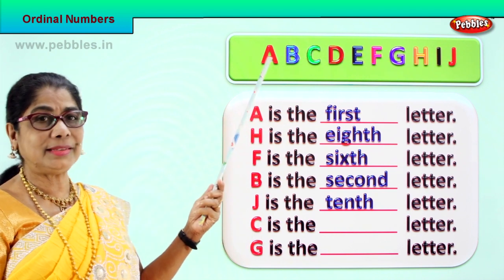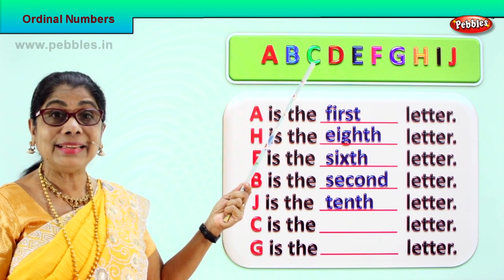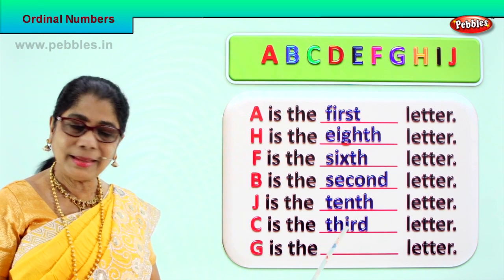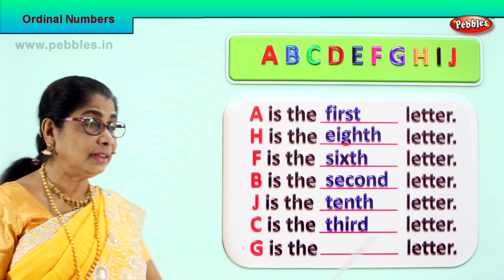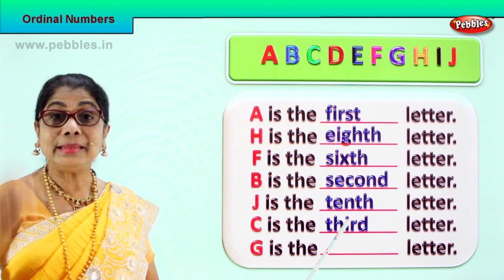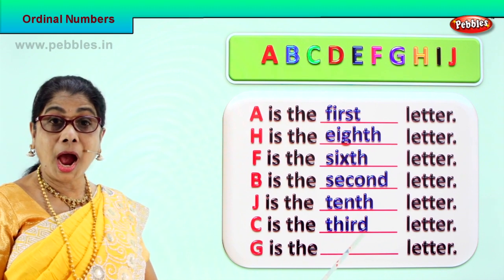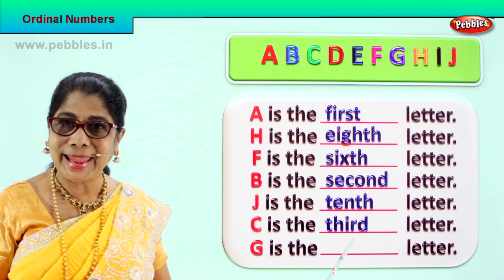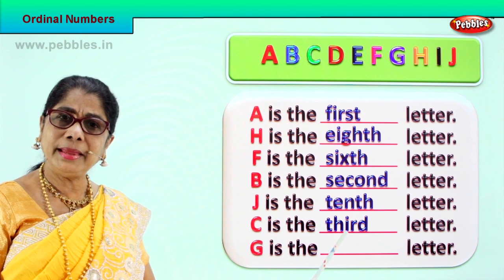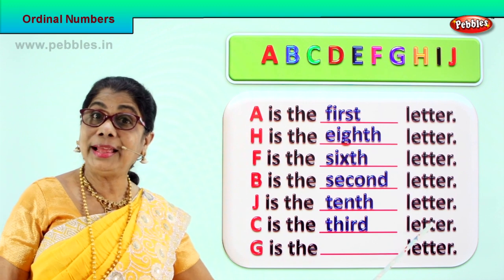First is A, B is second, C is third. C is the third letter. Spell third: T, H, I, R, D — third. C is the third letter.